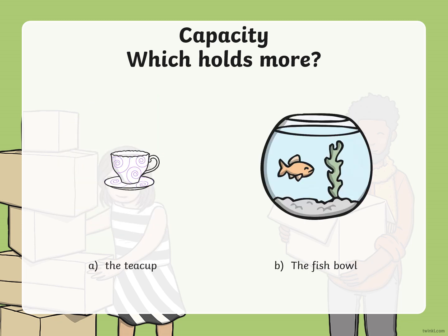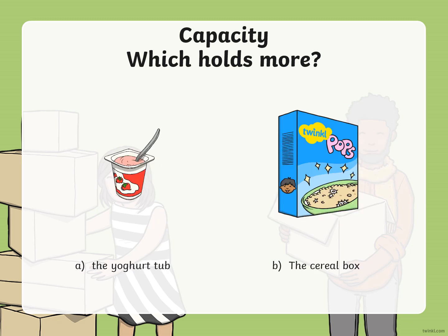And these two — the teacup or the fish bowl. We can visually tell, which means just by looking at these two pictures, we can see that the fish bowl could hold more than the little teacup because the fish bowl looks bigger. So it has more capacity to hold more.